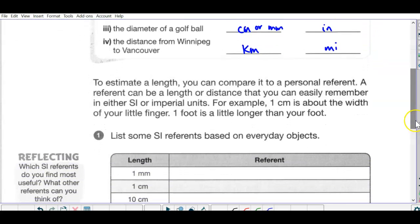All right, so to estimate a length you can compare it to a personal referent. So that's a word that you may not have seen before. Think about when you say reference or refer to. That's something similar to this. So basically a personal referent is an object that would have a measurement of something that's close to a meter or close to a yard or close to an inch.